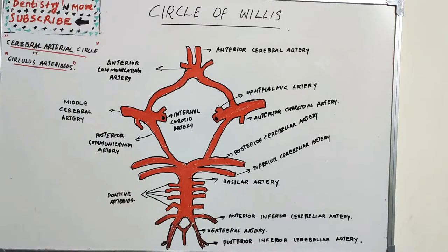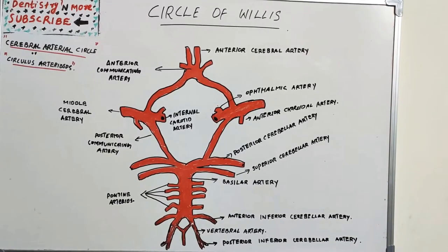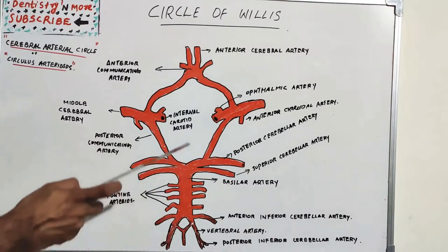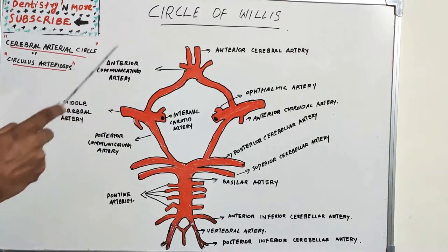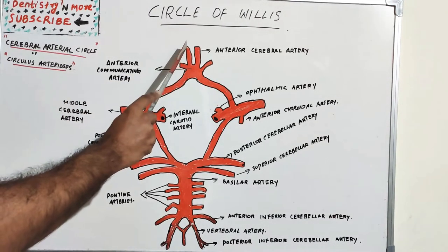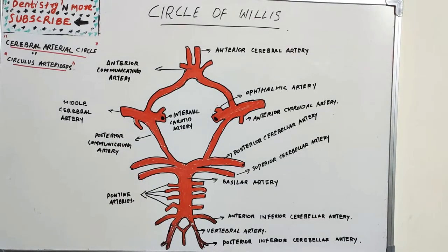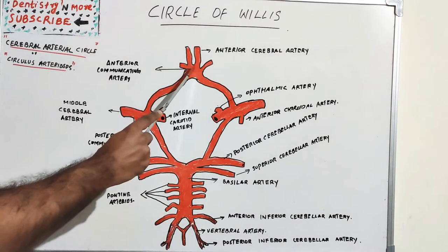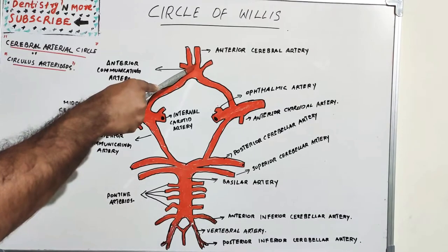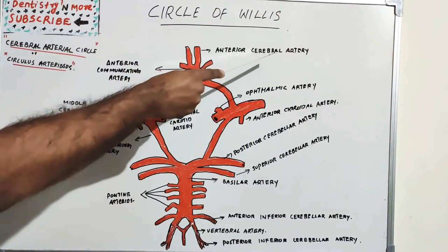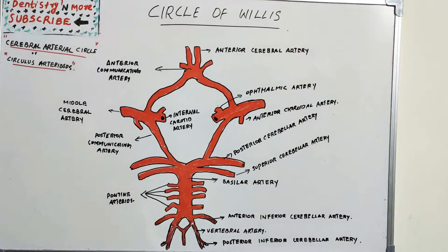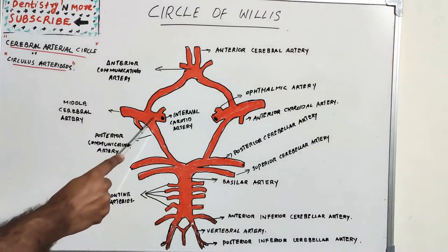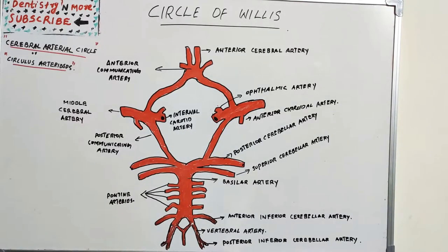Let's see the arteries from anterior to posterior. The paired arteries include the anterior cerebral artery — we have left and right. The unpaired artery is the anterior communicating artery. Then internal carotid artery, which is also paired with left and right.